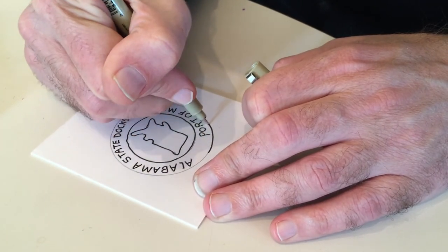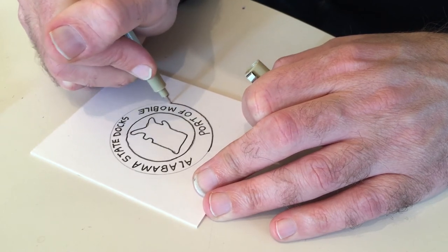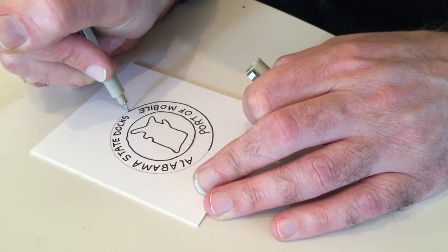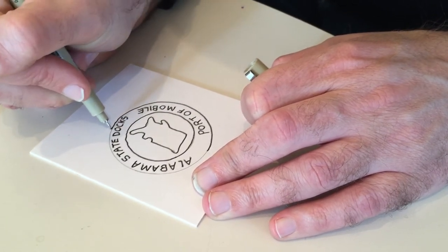The job of the Alabama State Docks boxcar said serving the Alabama State Docks port of Mobile. I really have to hand it to them that that's one of the more clever ideas that I've seen in railroad marketing.